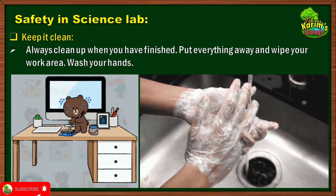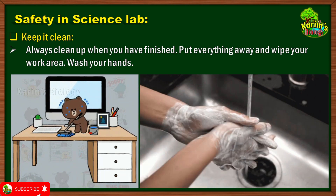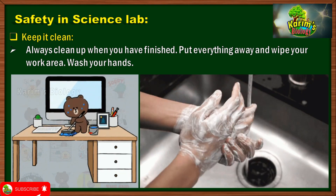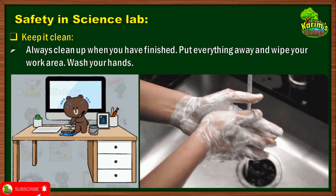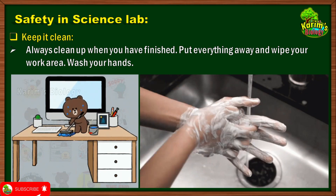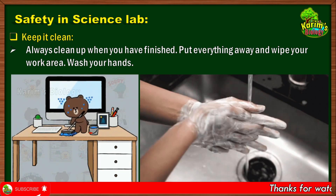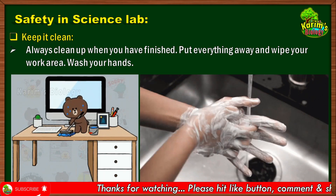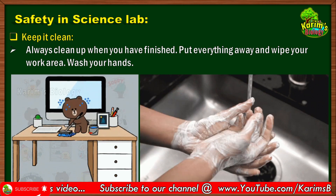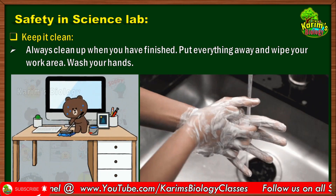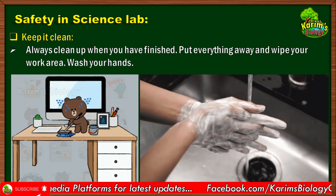The next safety precaution is: keep it clean — always clean up when you have finished. Put everything away and wipe your work area, then wash your hands thoroughly. After completing their experiment and making observations, many students get busy analyzing results and forget to clean up. When leaving the science lab after completion of the experiment, you must put everything away in its proper place, clean the work area with water, and wash your hands thoroughly with soap so that any germs or chemicals are washed away.